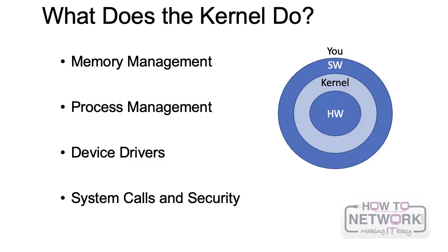A well-known example of when memory is not properly managed is back in the day with Windows 95 or Windows 98, where it was very common to see the blue screen of death - a good representation of an operating system not properly managing RAM memory. The kernel is also responsible for managing processes, controlling how processes and software are operating, and this leads to our next topic: system calls and security.